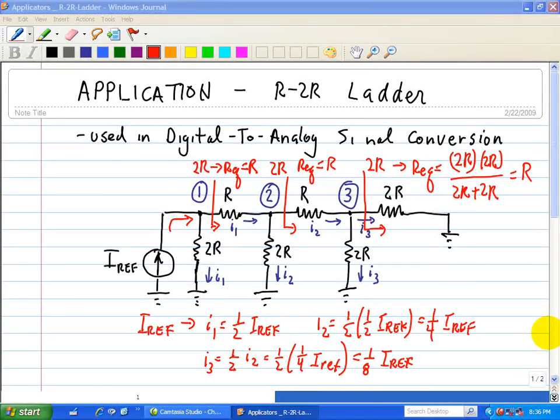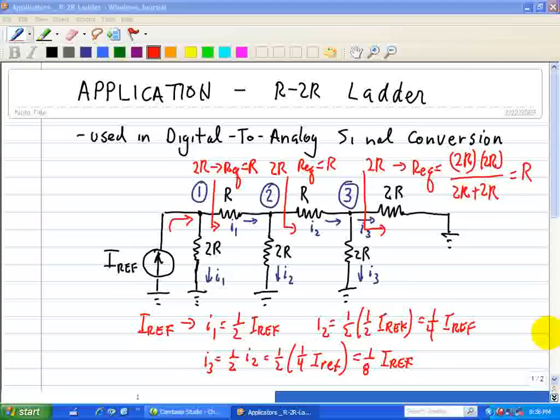Clearly, we can extend this R-2R network to a larger number of nodes. In fact, commercially available integrated circuit ladders have as many as eight numbered nodes producing binary currents, ranging from I ref divided by 2 to I reference divided by 256.